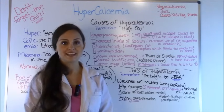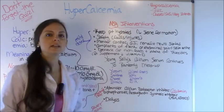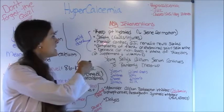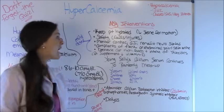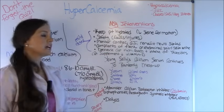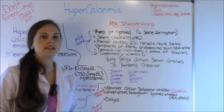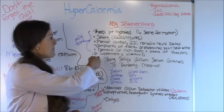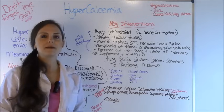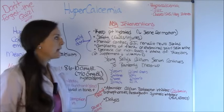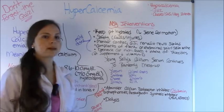Now let's look at the nursing interventions. First, keep that patient hydrated — this will help decrease the formation of kidney stones. Watch out for safety, such as falls or injuries, because these patients are at risk for bone fractures. Monitor their cardiac, GI, renal, and neuro status. Put them on a heart monitor and watch for shortened QT intervals. Also watch if the patient complains of flank or abdominal pain, as this may be a sign a kidney stone is forming — if so, strain the urine to see if they've passed anything every time they void.